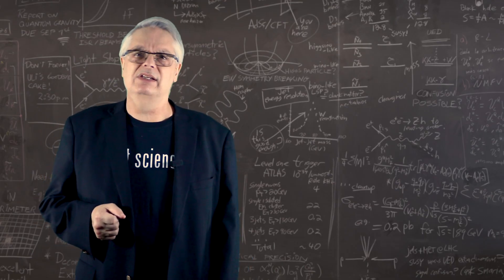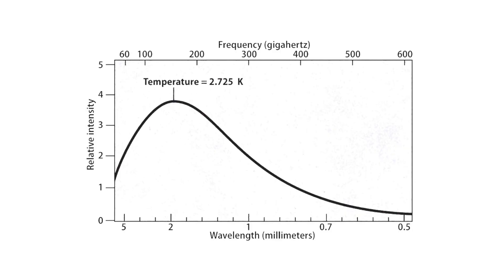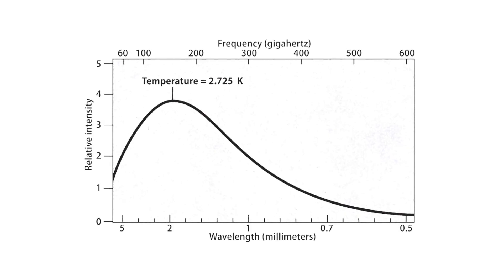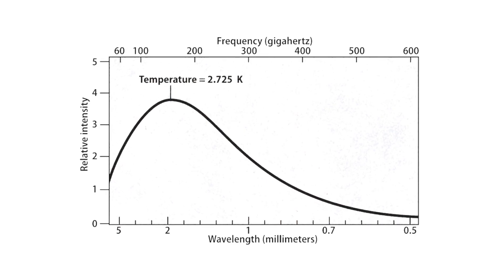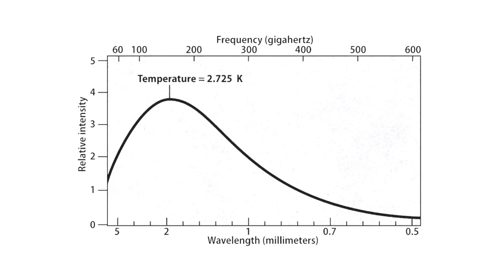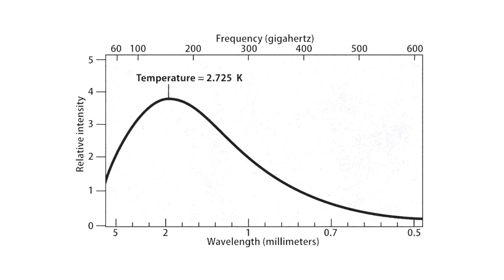The CMB isn't just one wavelength. It's a spectrum of wavelengths, and the spectrum is exactly what would be emitted by an object with a temperature of 2.7 degrees Kelvin, or minus 450 degrees below zero Fahrenheit.